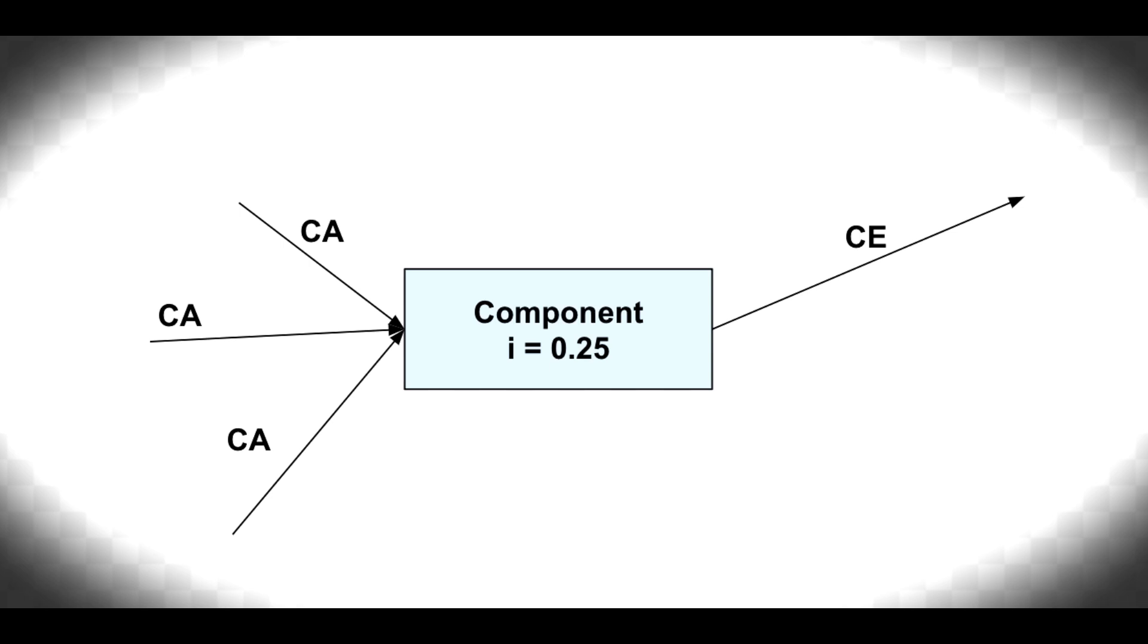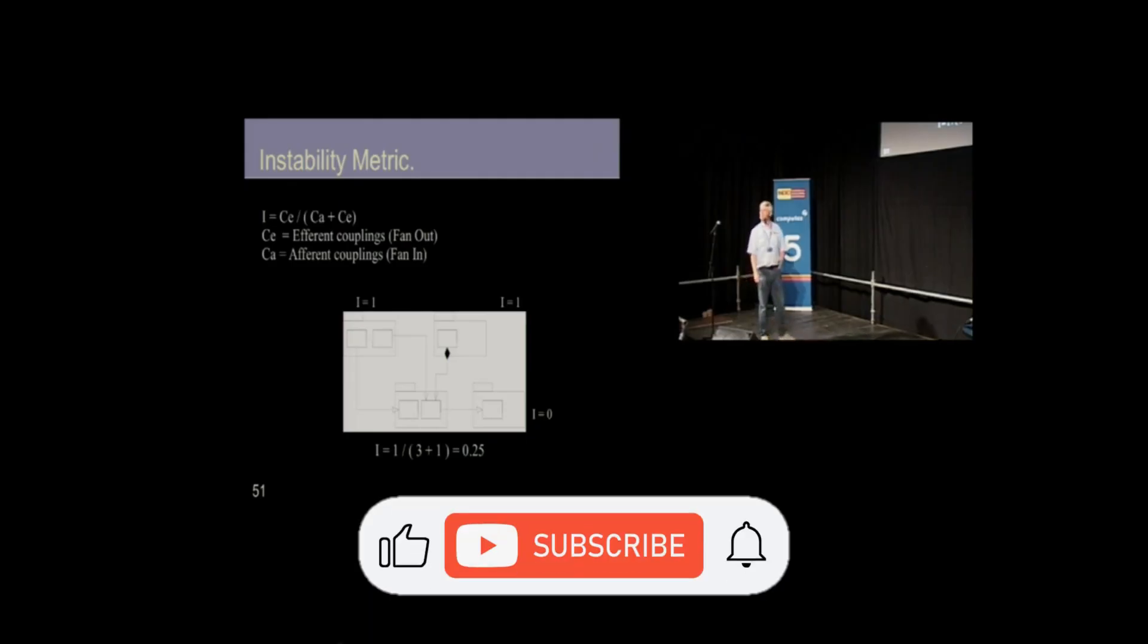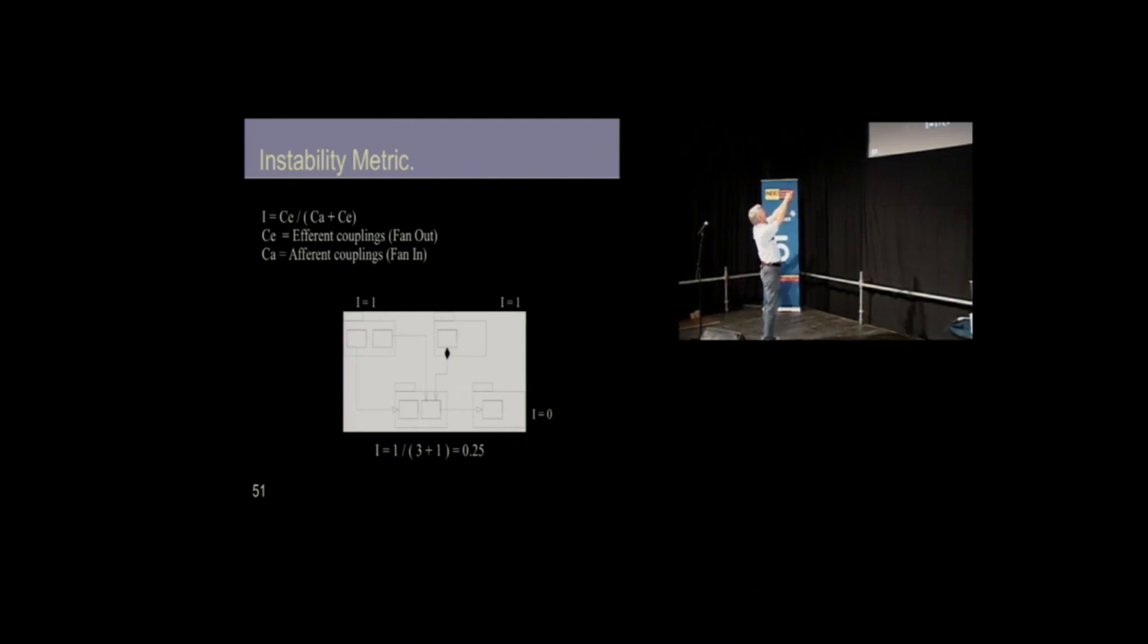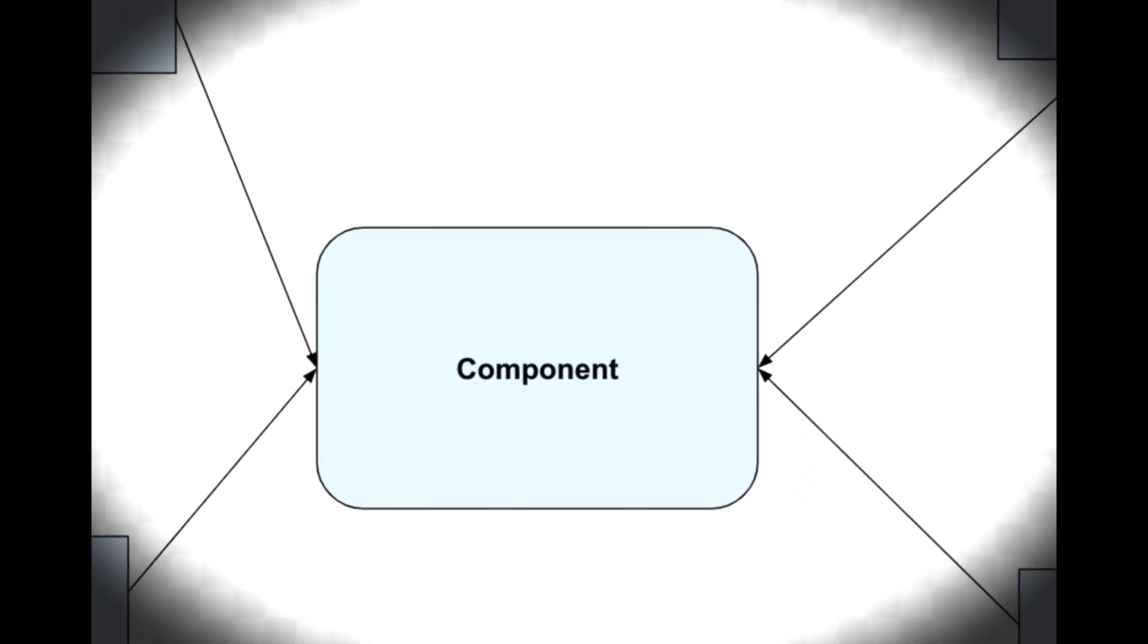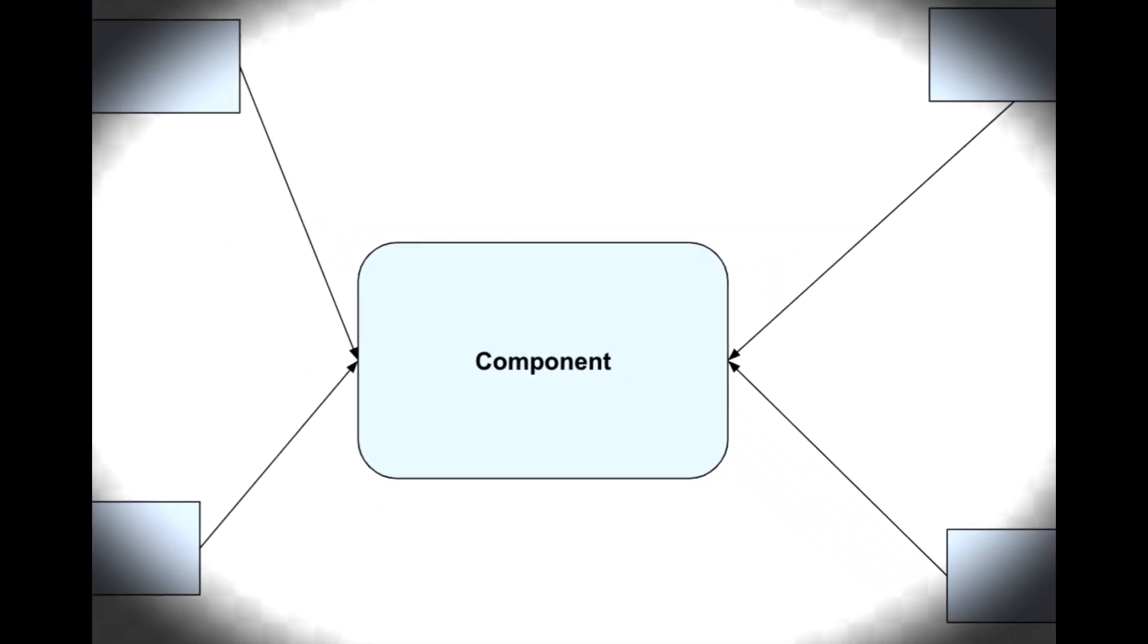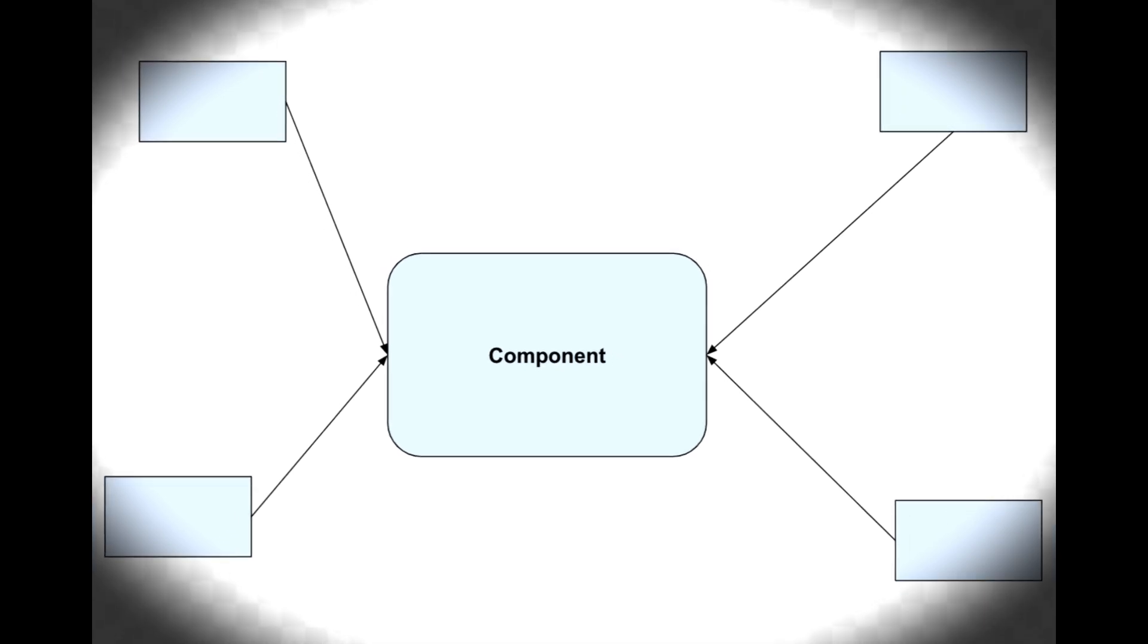I is called instability. Instability is a metric that goes from zero to one. If I is zero, what does it mean that CA and CE are? CE is zero. The incoming dependencies are zero, or the outgoing dependencies are zero, and the incoming dependencies are not. So there are many incoming dependencies, but no outgoing dependencies. That's the adult.